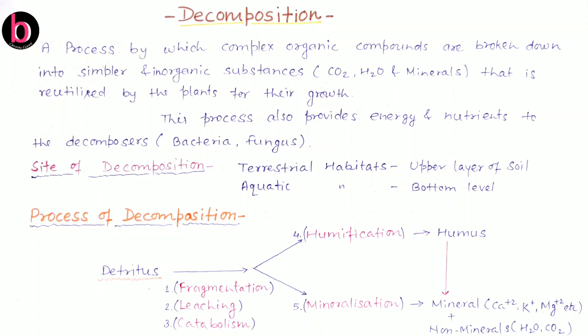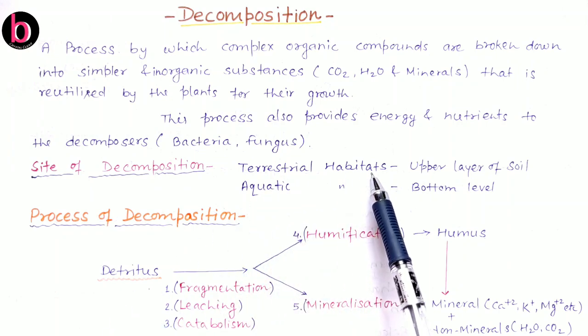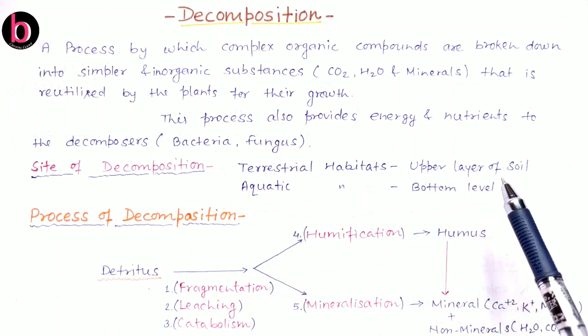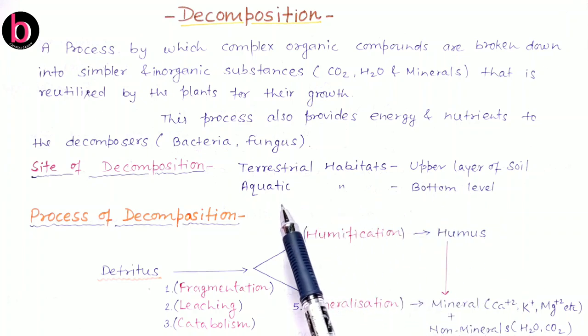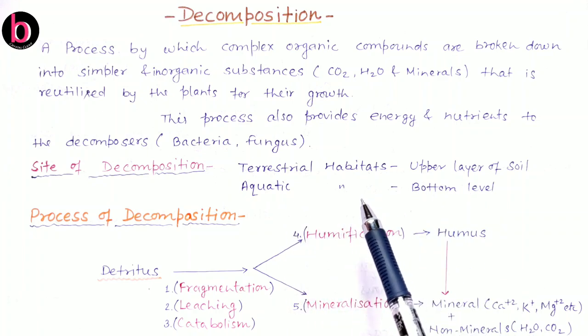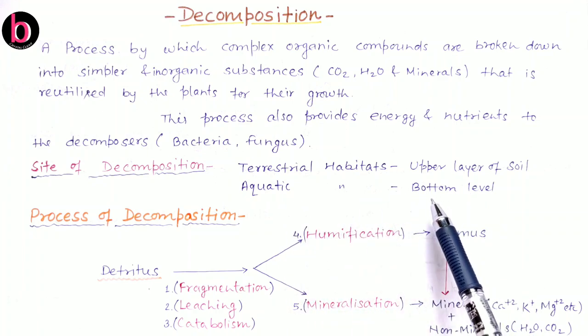Now what is the site of decomposition? In terrestrial habitats, the site is the upper layer of soil, while in aquatic habitats, decomposition takes place at the bottom level of the water body.